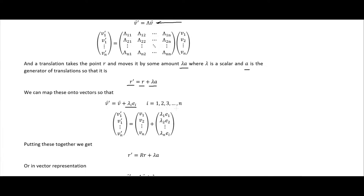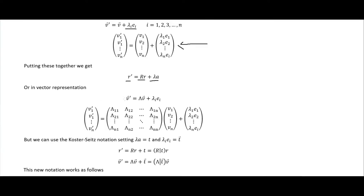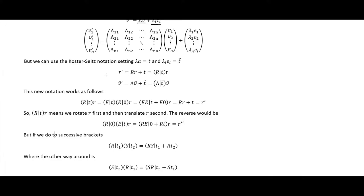We're moving R by some distance lambda*A, and we can map these onto vectors as the sum of lambda_i * E_i where the E_i's are our basis vectors, going from 1 to n. Putting these together, R prime equals our rotation plus our translation, which we can put in vector representation — we are rotating or reflecting our vector and then adding a scalar times each of the basis vectors.